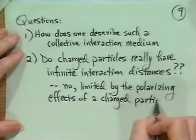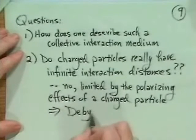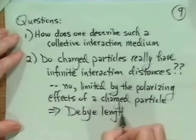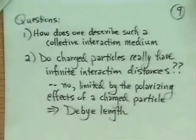This is what we'll do the mathematics of, by the polarizing effects of a charged particle on all the other charged particles. This will lead to something called the Debye length, which is the collective interaction distance. We won't have interactions longer than that Debye length. That's what we next want to derive here.